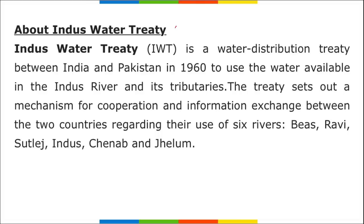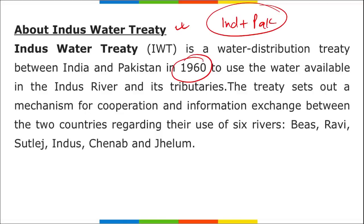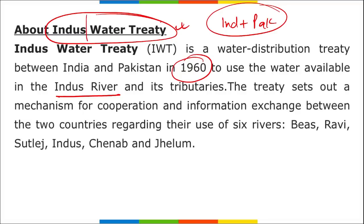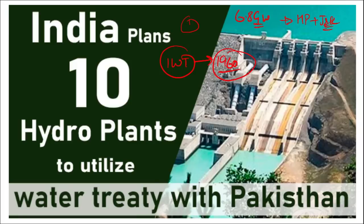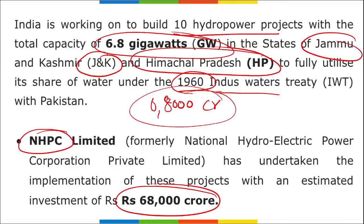These projects are being developed in line with the Indus Water Treaty signed with Pakistan in 1960. The treaty is a water distribution agreement related to the River Indus, covering six rivers: Beas, Ravi, Sutlej, Indus, Chenab, and Jhelum. Notably, Beas is the only river among these that does not flow into Pakistan. India is now building 10 hydropower projects to utilize its full water entitlement under this treaty.